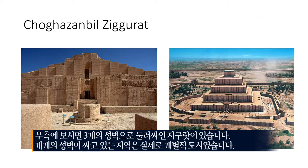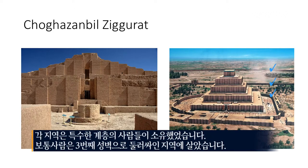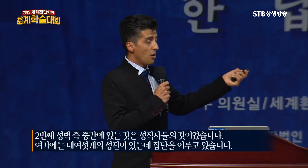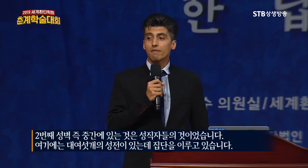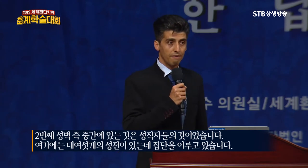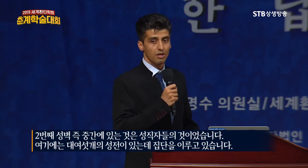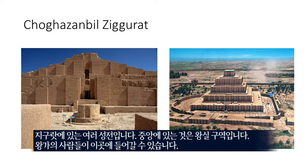On the right side, you will see that the ziggurat is surrounded by three walls — the first wall, the second wall, and the third wall. Each part of the city belongs to a special group of people. Ordinary people live in the third layer. The second or middle layer belongs to the priests, and in this layer there are several temples — it's actually a complex. The final, central one is the royal section, which only the royal families could enter.